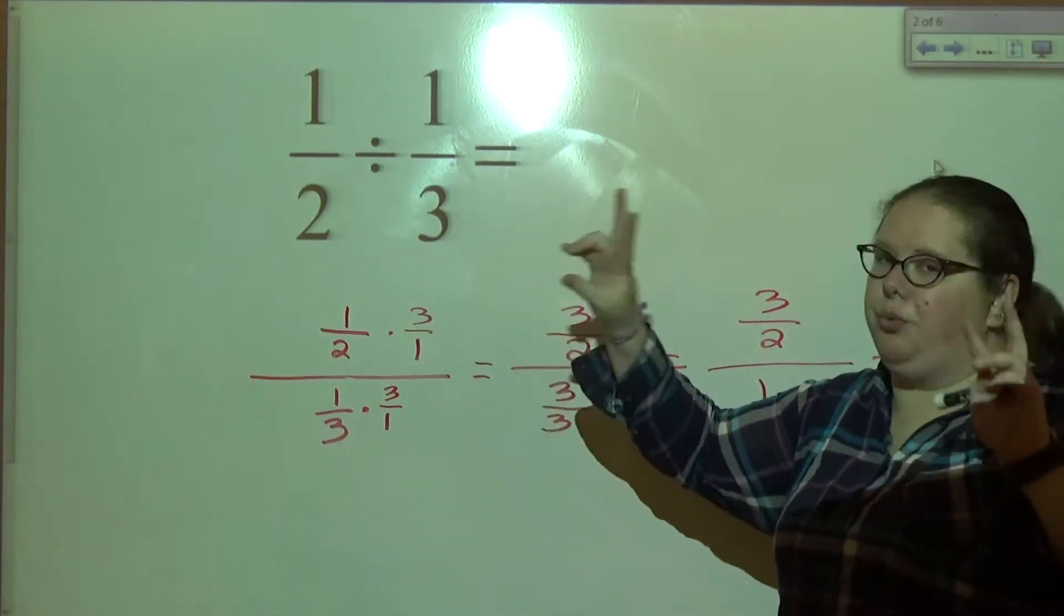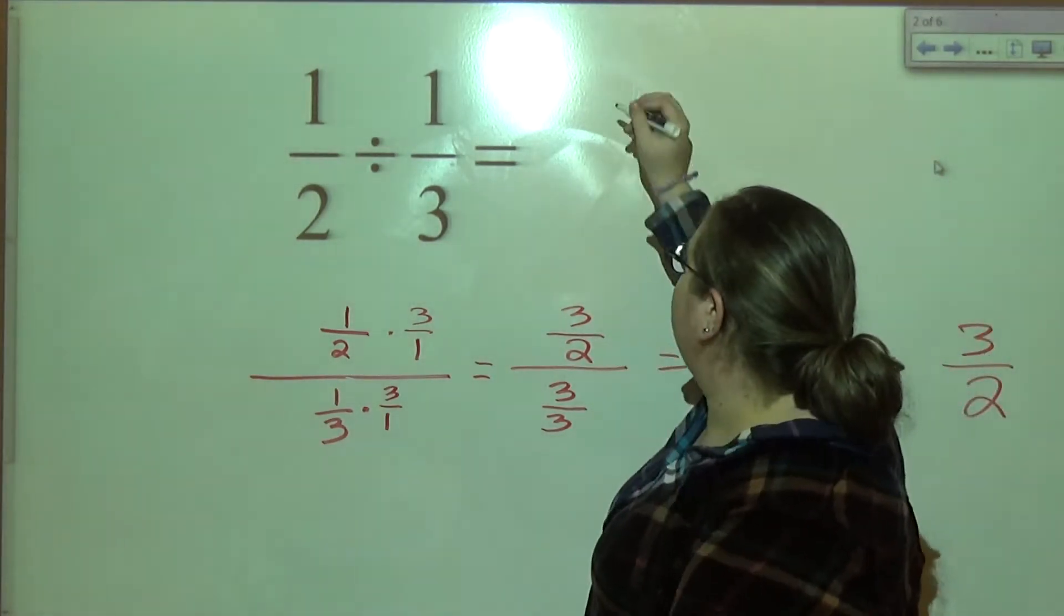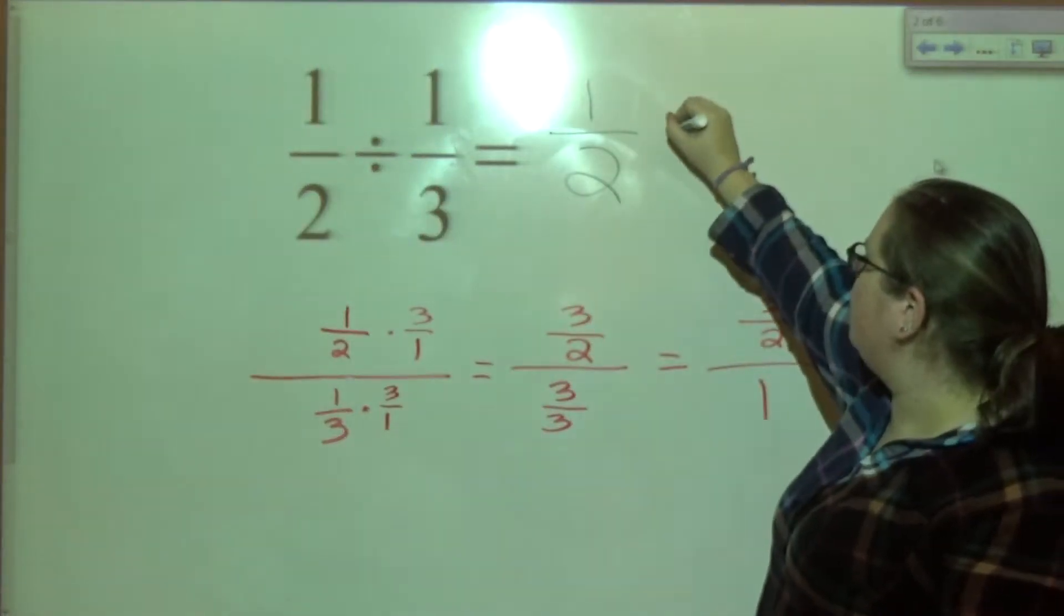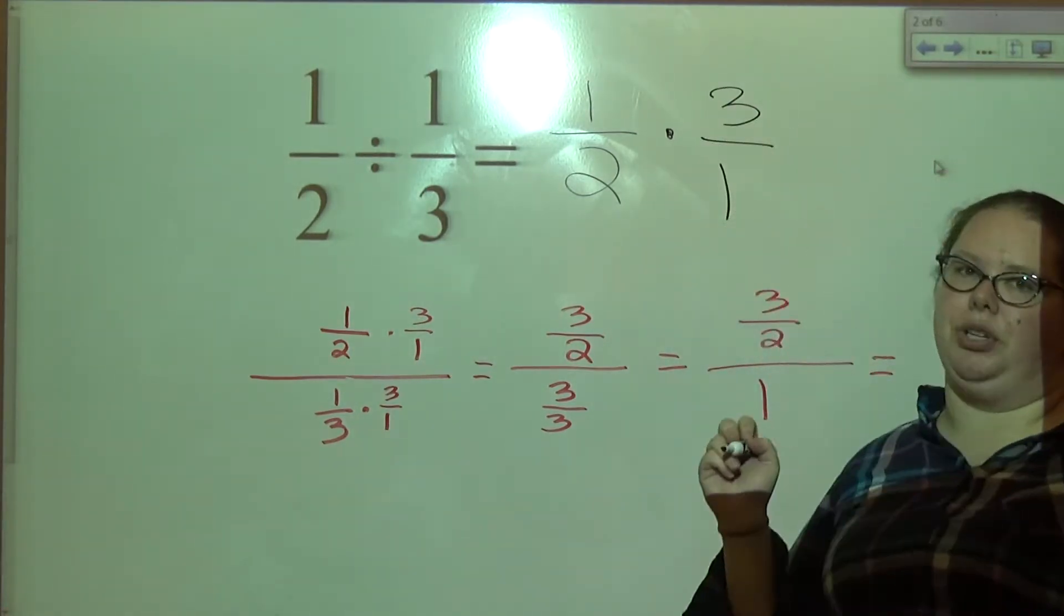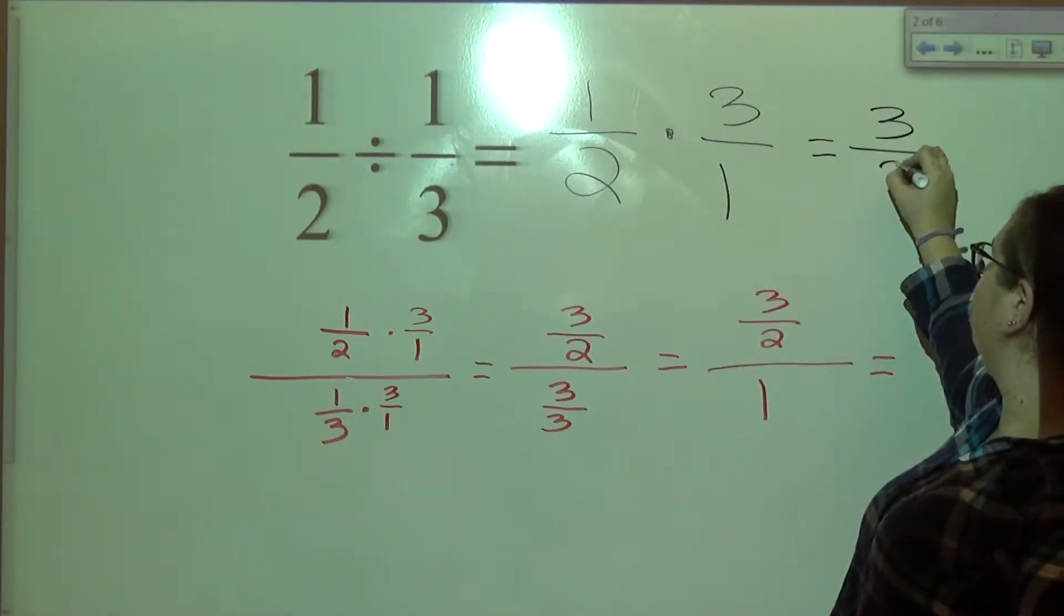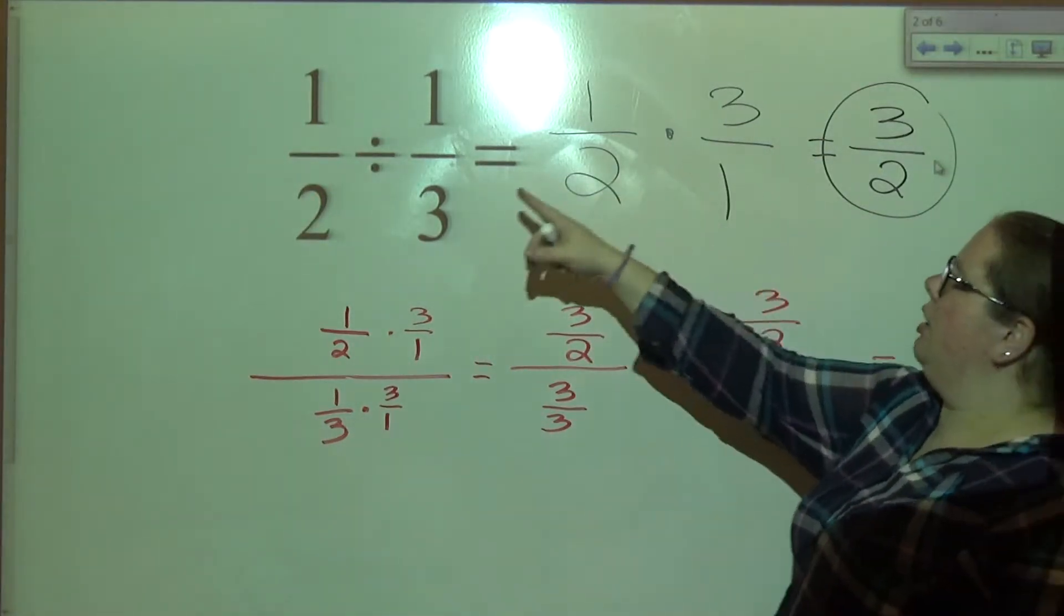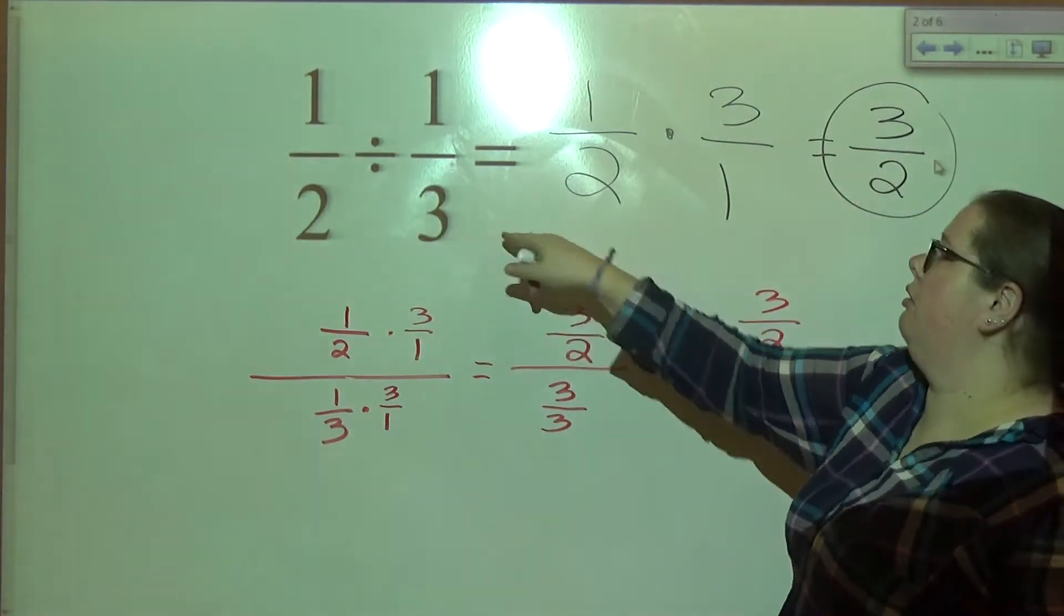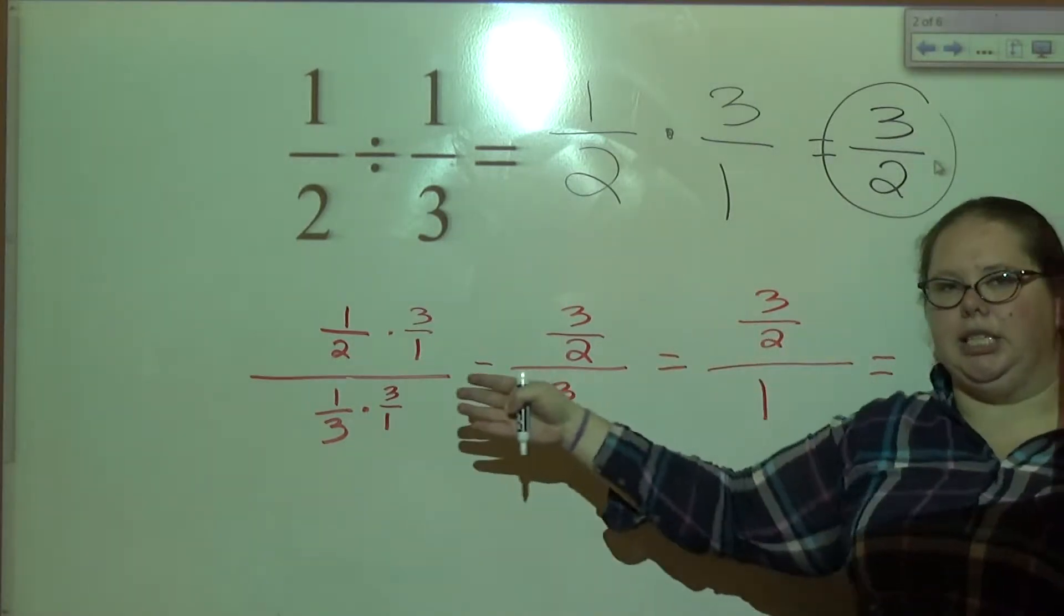But this is the real process here. The whole idea that teachers go through is, okay, we keep the first the same, change your division to multiplication, flip your second fraction, or take the reciprocal. Some teachers get really mad when you say flip the fraction, let's take the reciprocal of the fraction. And you get three over two. So this is the process that's typically taught. Keep it the same, change it to times, flip it, keep change flip. This is kind of the reasoning behind it.